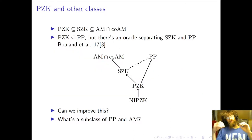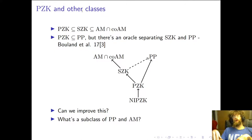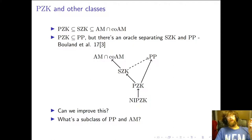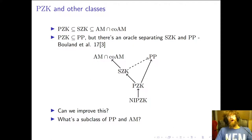So how do perfect zero knowledge and non-interactive perfect zero knowledge fit into other complexity classes? Obviously NIPZK is in PZK, which is in SBP, because you just relax the simulation condition. SZK is known to be in AM and also CoAM, because it's closed under complement. PZK was recently shown to be in PP, but there's an oracle separation between SZK and PP.